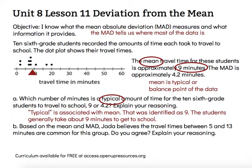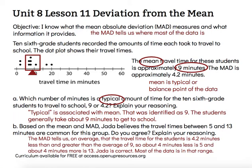The MAD is four and two-tenths minutes, which means most of the data is within four and two-tenths minutes to the left and to the right of the center. On average, the travel time is four and two-tenths minutes less than and greater than the average of nine. About four minutes less is five, and about four minutes more is thirteen. So Jada is correct — most of the data is within that range of four minutes before or after that typical value of the mean.